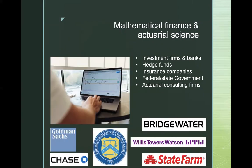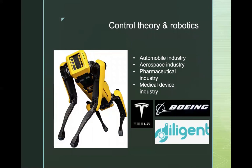Applied mathematicians are very sought after in mathematical finance and actuarial science. Investment firms and banks, hedge funds, insurance companies, branches of the federal and state government involved in finance, and actuarial consulting firms provide very lucrative career options. Another large class of employers are in control theory and robotics — in the automobile industry such as Tesla, in the aerospace industry such as Boeing, in the pharmaceutical or medical device industry such as Diligent. And you've all seen the Boston Dynamics robots, whose incredible skills are made possible by applied mathematical tools.